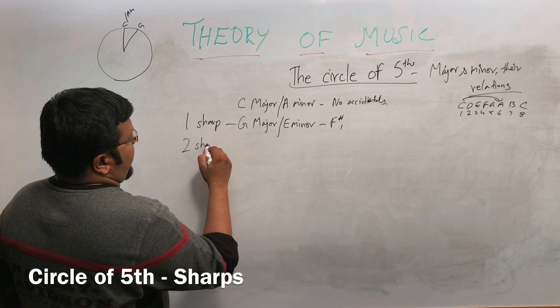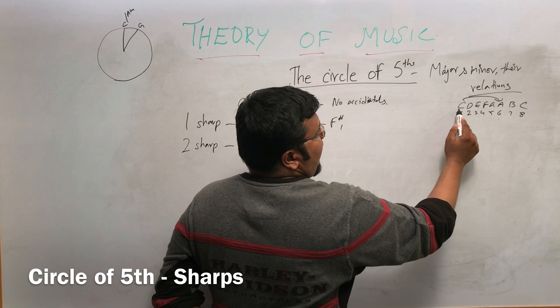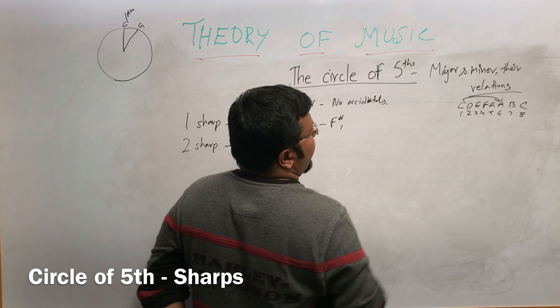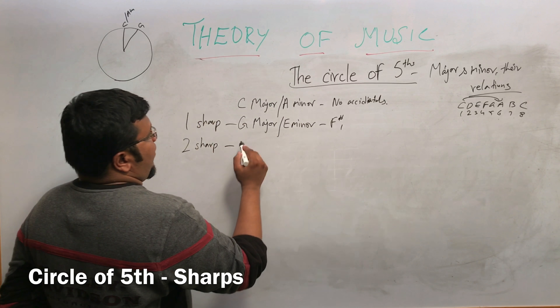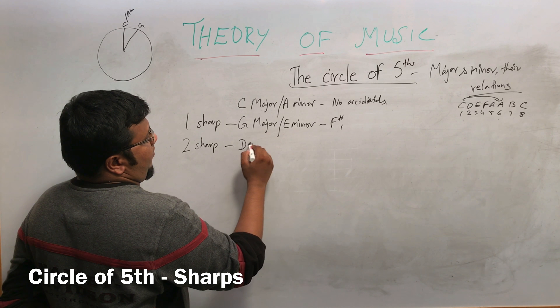Now we are going to learn the two-sharp scale. From G, counting one, two, three, four, five — that is called D major.